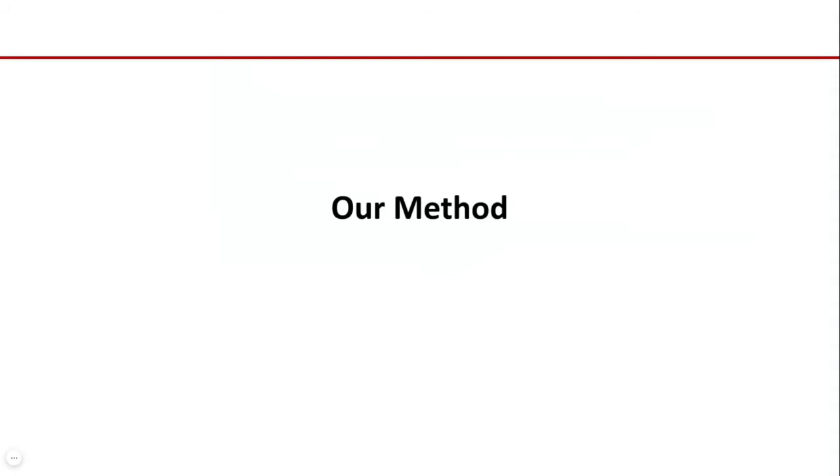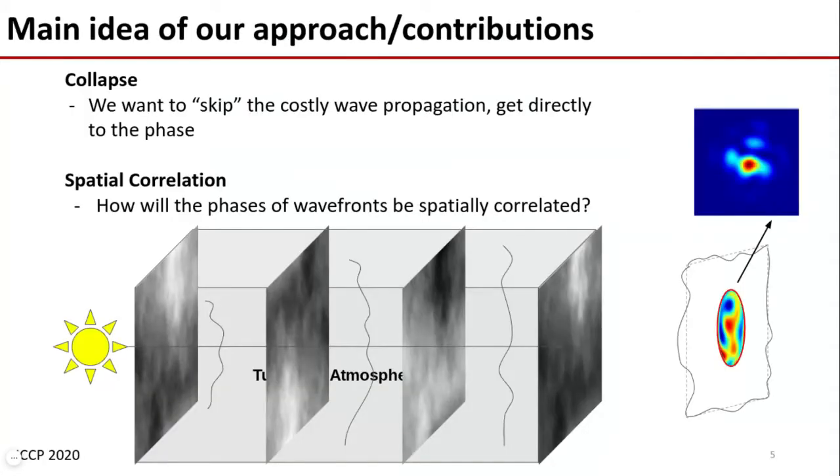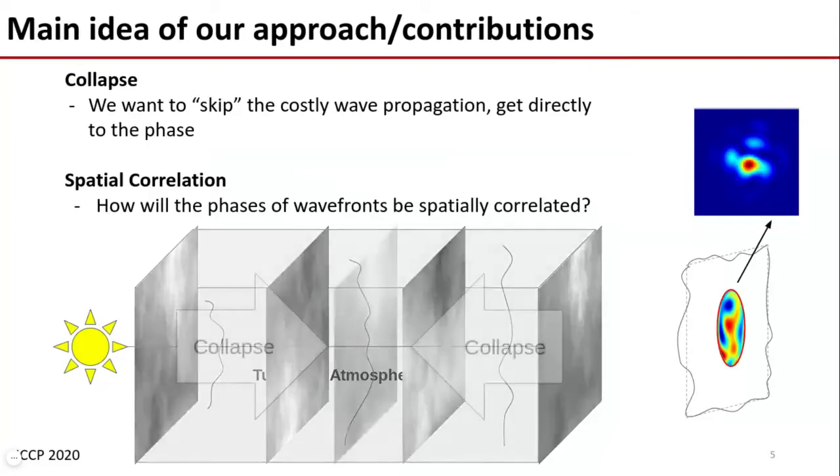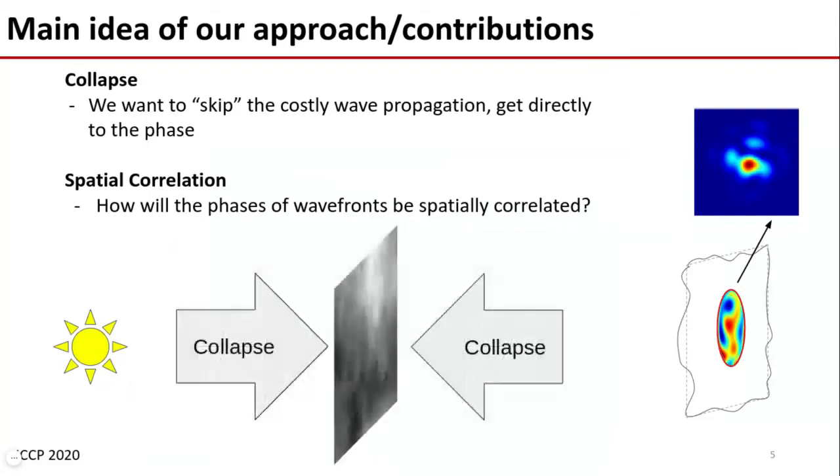Now onto our method. For our approach, we like to collapse the phase screens using the thin screen model and get directed to the phase in order to avoid the Fourier transforms. Doing away with the phase screens, however, leaves us with a bit of difficulty in evaluating their spatial correlation.